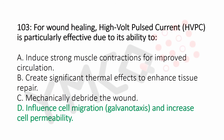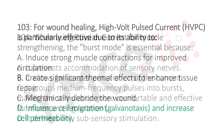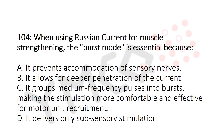Question number 104: When using Russian current for muscle strengthening, the burst mode is essential because: Option A: it prevents accommodation of sensory nerve. Option B: it allows deeper penetration of current. Option C: it groups medium frequency pulses into bursts, making the stimulation more comfortable and effective for motor unit recruitment. Option D: it delivers only subsensory stimulation.